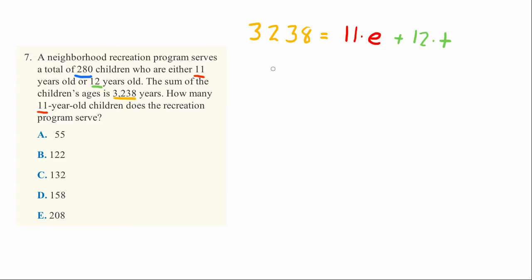There are 280 students total, so 280 equals E (the number of 11-year-olds) plus T (the number of 12-year-olds). Now we have two equations and two unknowns, so we can solve for them.